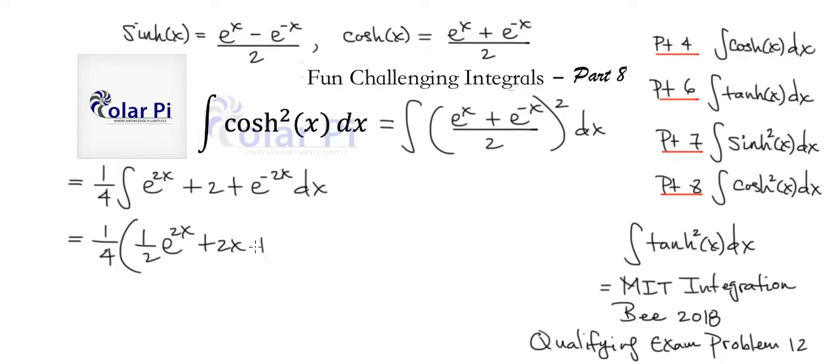And then plus the integral of this is negative 1/2 e to the negative 2x, so I'll just write minus 1/2 e to the negative 2x and then, of course, plus c.